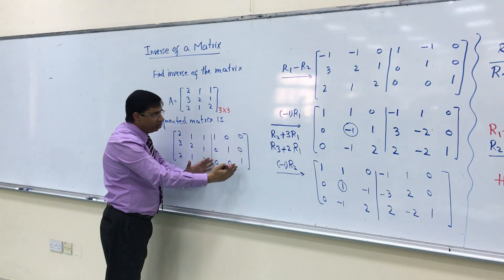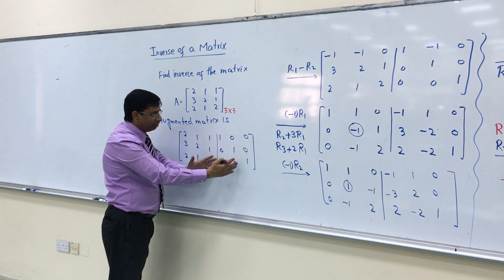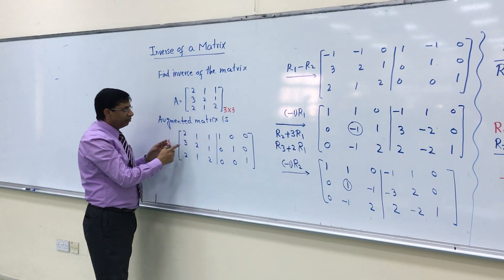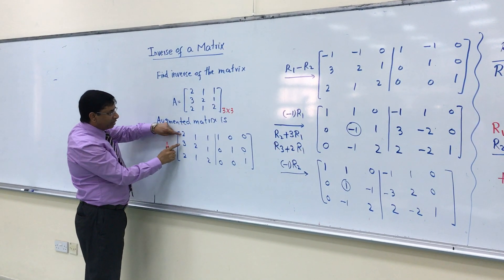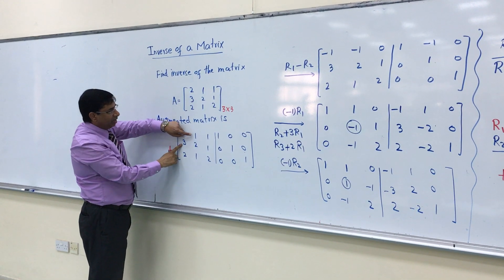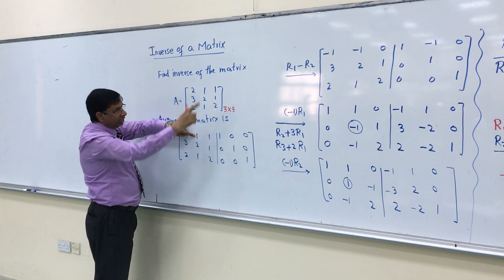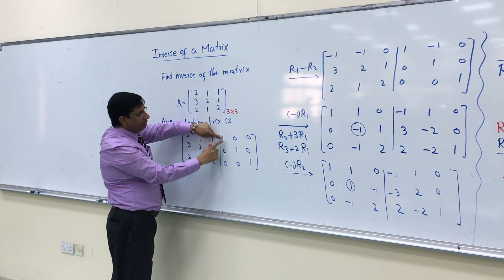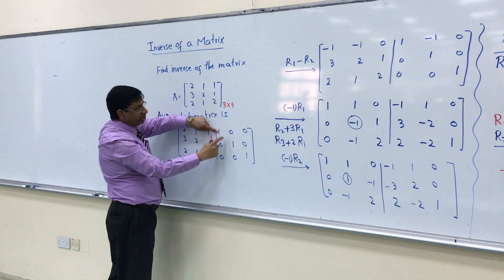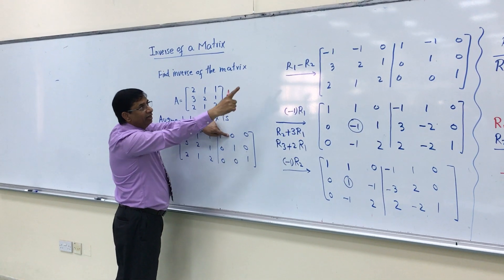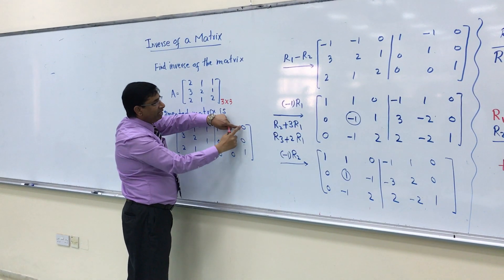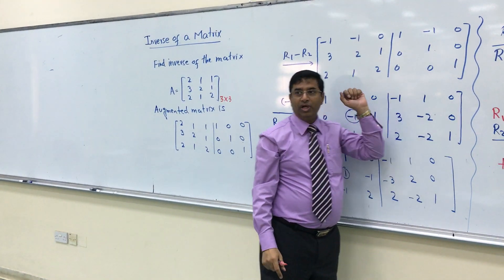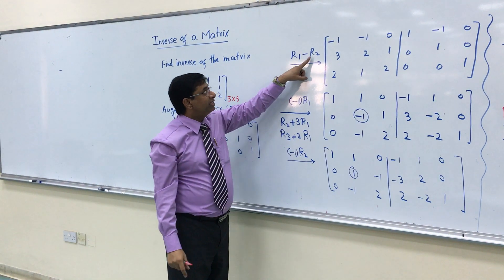So what are we doing? We subtract: 2 minus 3 gives negative 1; 1 minus 2 gives negative 1; 1 minus 1 gives 0; 1 minus 0 gives 1; 0 minus 1 gives negative 1; 0 minus 0 gives 0. We obtain this new row and write R1 minus R2 — the change comes in R1.